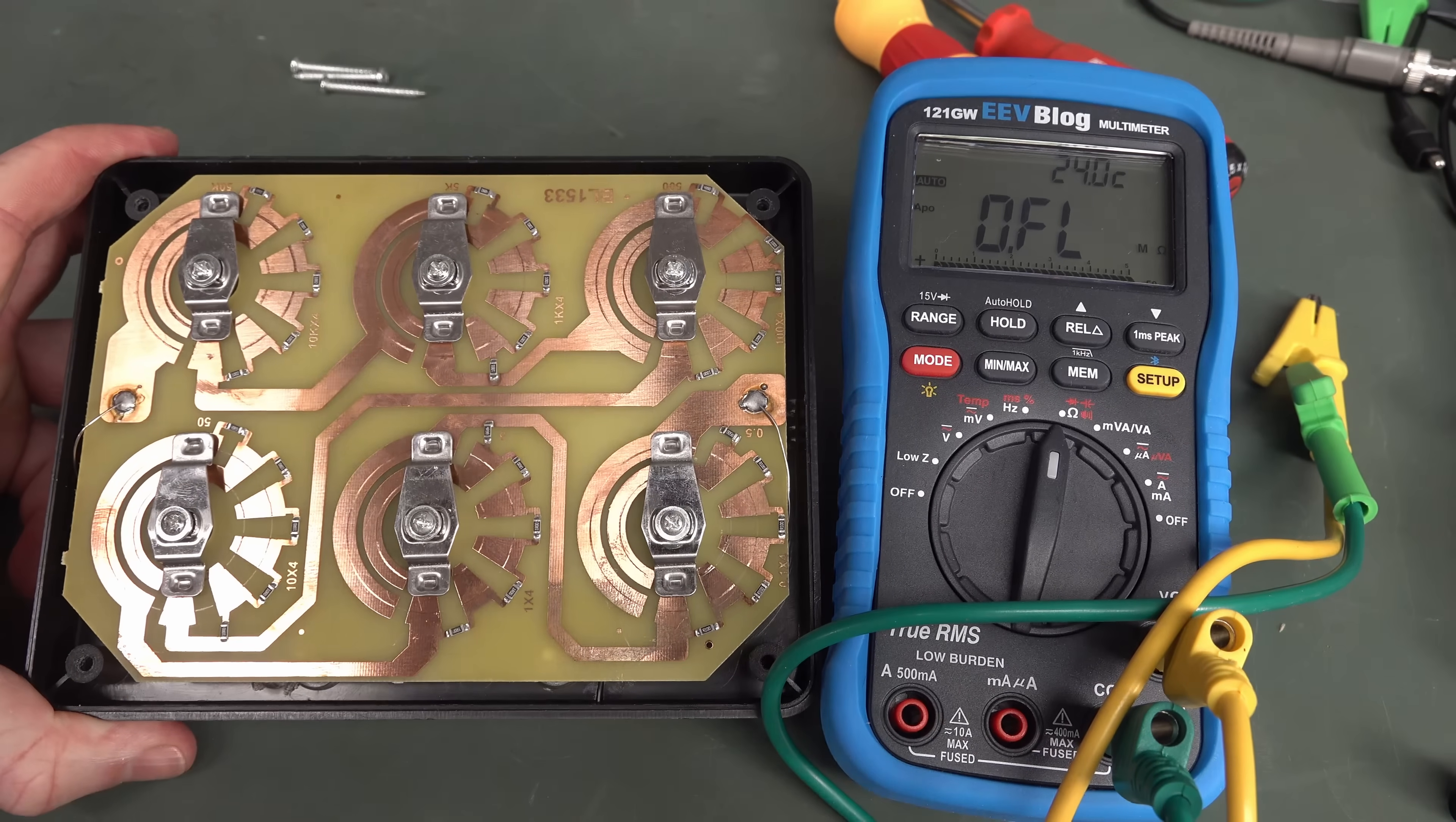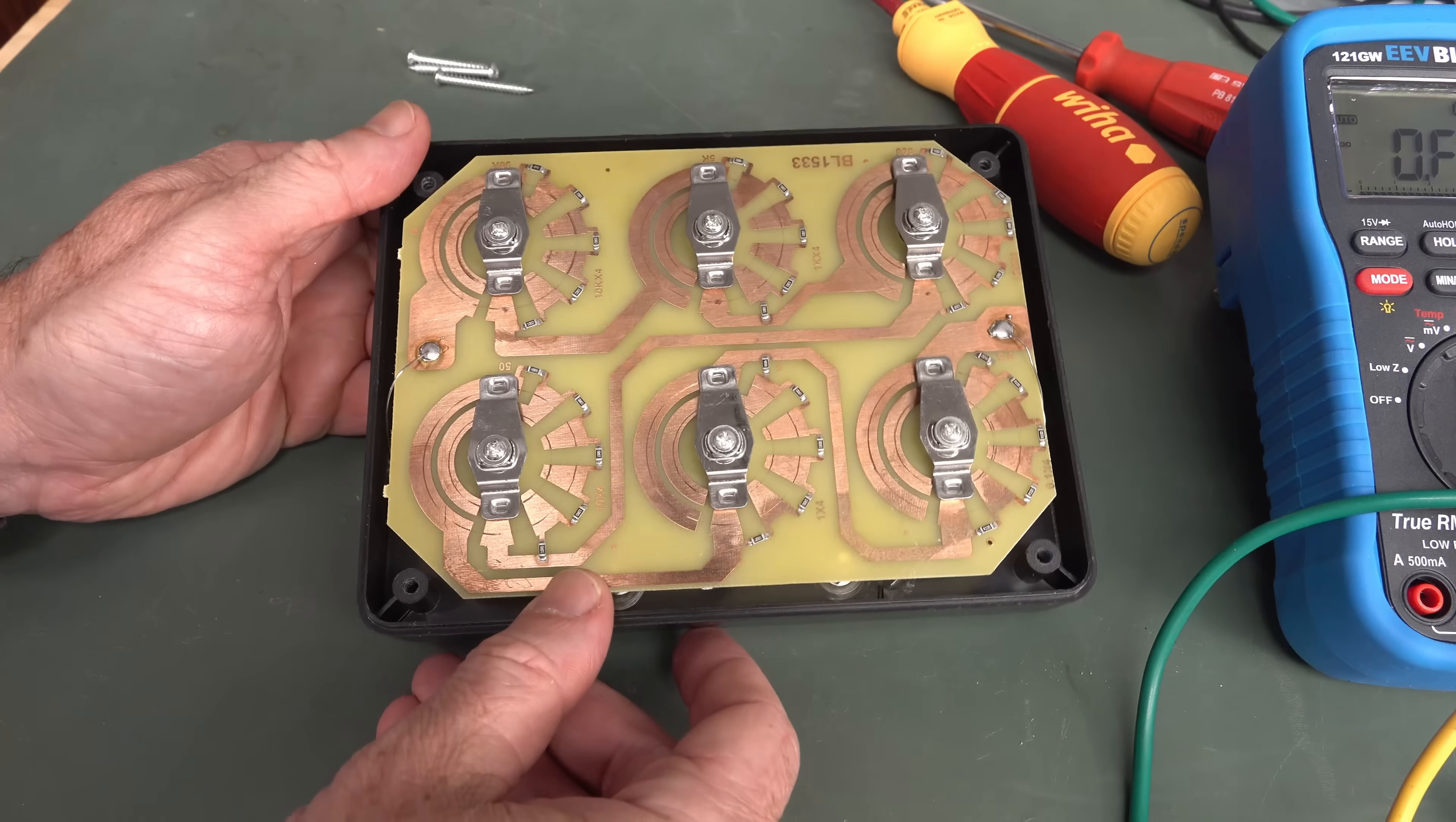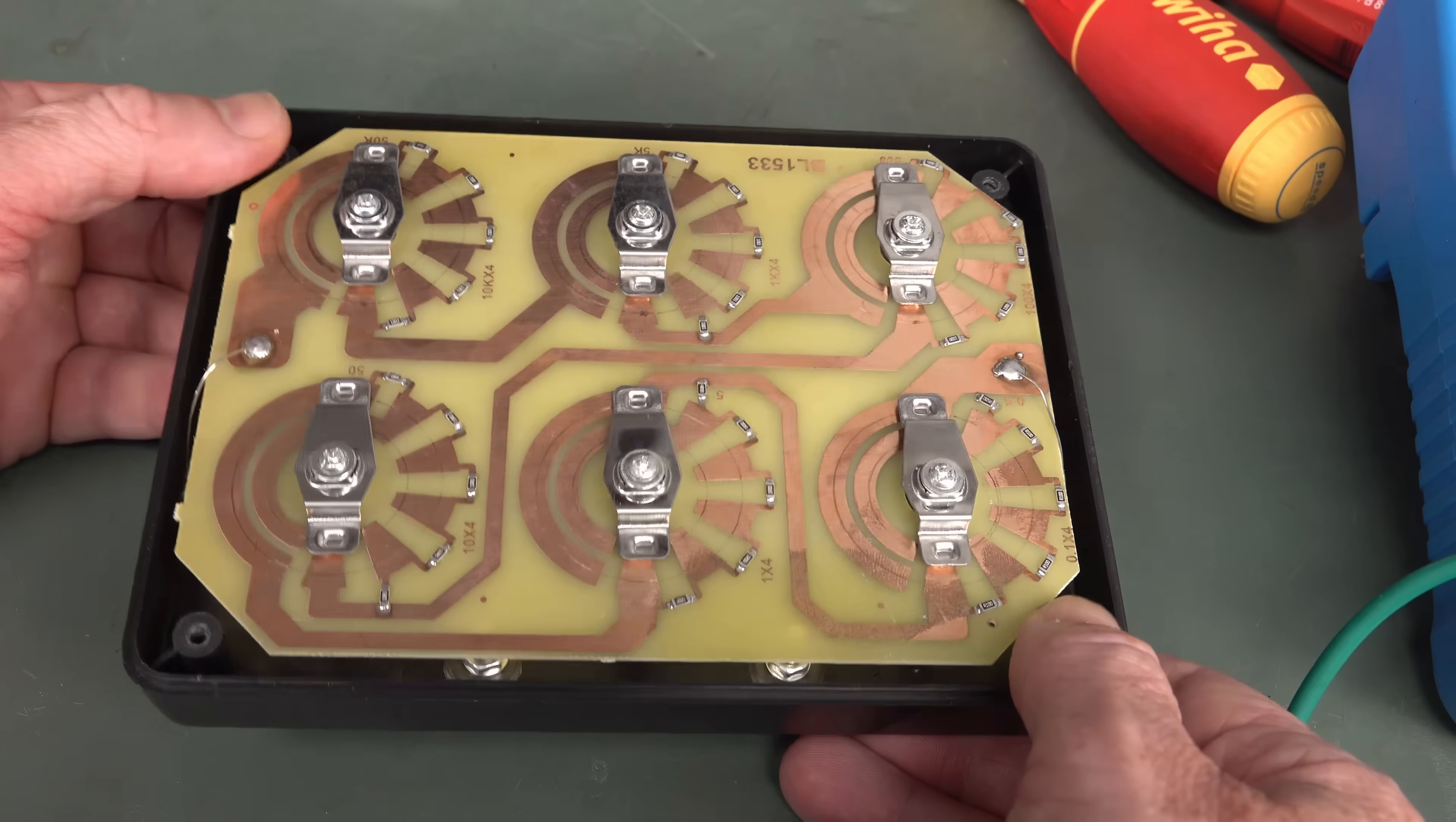That fixes that problem. And what's to stop you from simply modifying this? I really like this housing and the switch arrangement feels absolutely fantastic. The lack of plating on here is concerning, but if you want to up the resistor rating, this would be great to modify. You could simply desolder these and solder in your own, like five watt resistors or something. There's a ton of room. You could have a high wattage box no problems whatsoever.